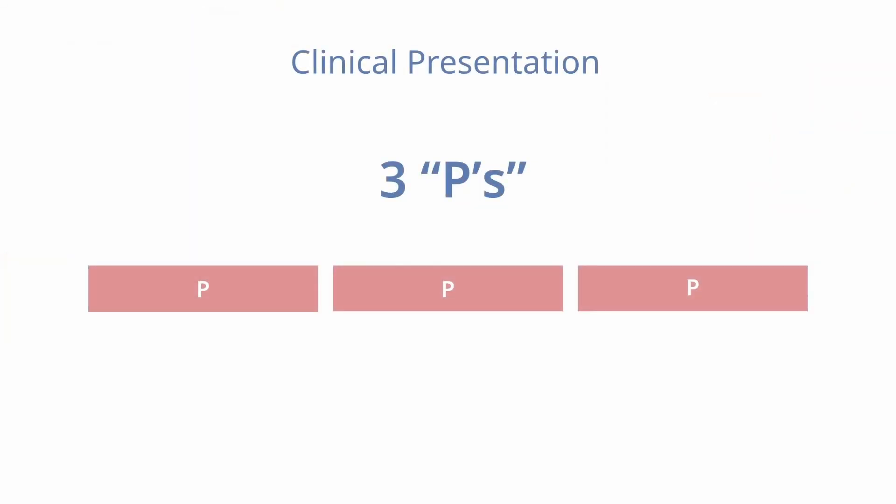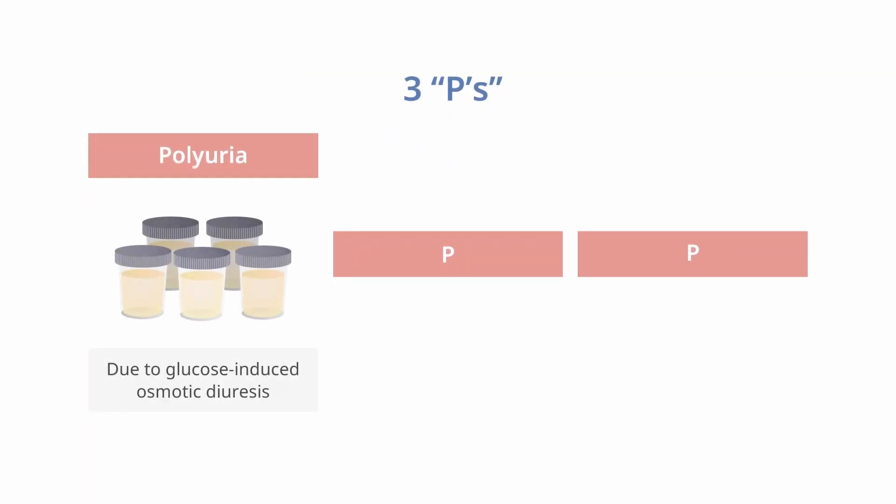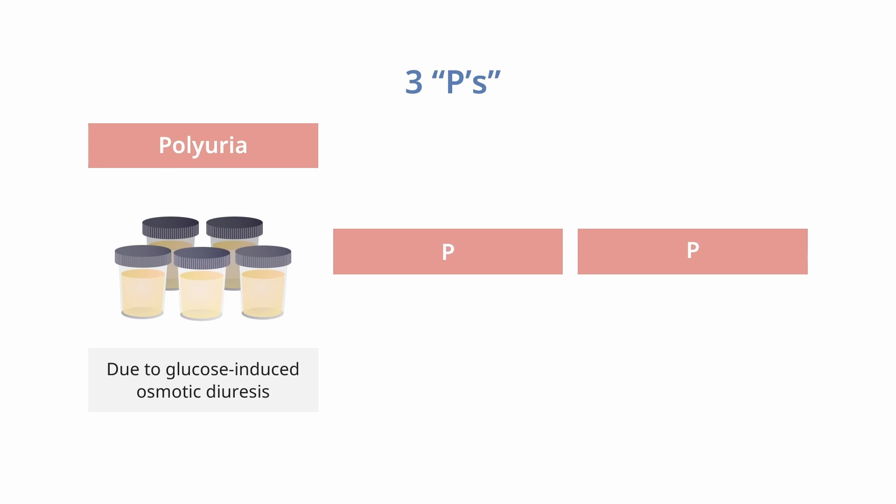When we talk about clinical presentation, we talk about the three Ps. And we touched a little bit on this in a previous presentation, but let's go over these again. So your first P is going to be the polyuria. Patients that are in DKA have just a copious, huge amount of urine output. And this is due to glucose-induced osmotic diuresis. So they are just going to be peeing a lot.